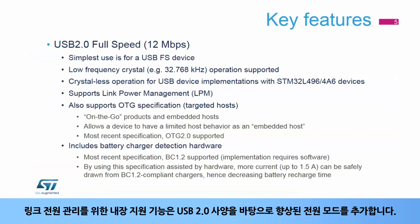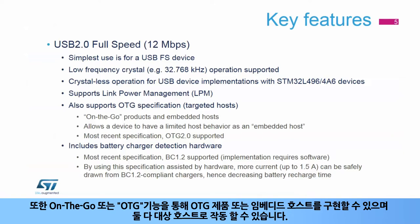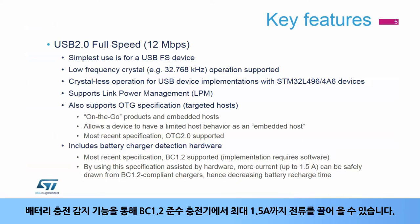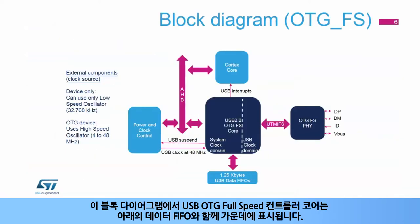Its built-in support for link power management adds enhanced power modes on top of the USB 2.0 specification. The on-the-go or OTG function enables the implementation of an OTG product or an embedded host, both of which have the capacity to behave as a targeted host. The battery charger detection feature allows for increased current up to 1.5 amps to be drawn from BC 1.2 compliant chargers.